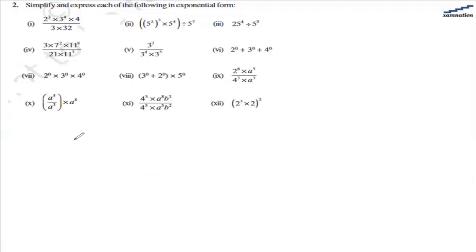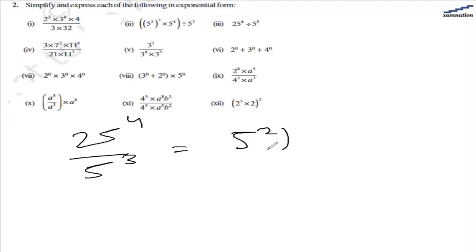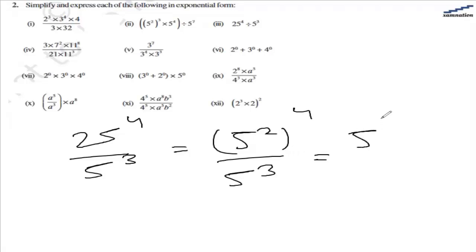In the third part, we have 25 raised to the power of 4 multiplied by 5 raised to the power of 3. Now 25 is basically 5 raised to the power of 2, so we have 5 raised to the power of 2, this whole raised to the power of 4, multiplied by 5 raised to the power of 3. The powers get multiplied: 2 times 4 equals 8, giving 5 raised to the power of 8. Then 8 plus 3 equals 5 raised to the power of 5, which is the answer.